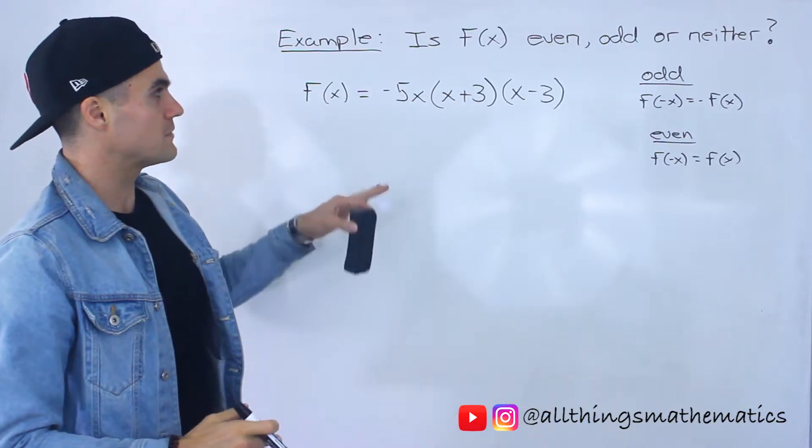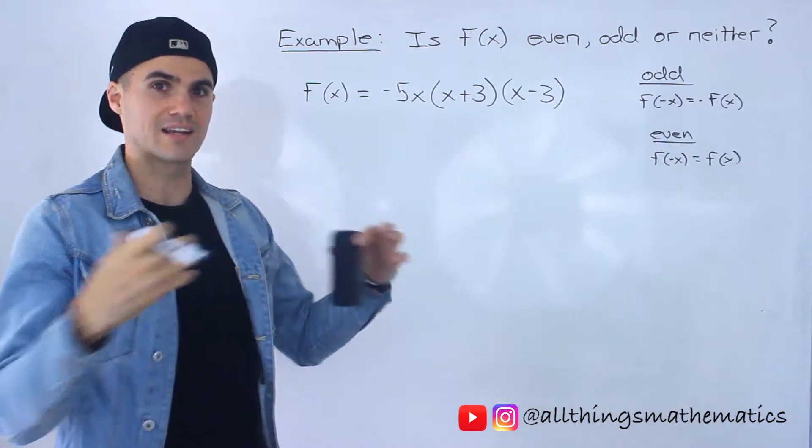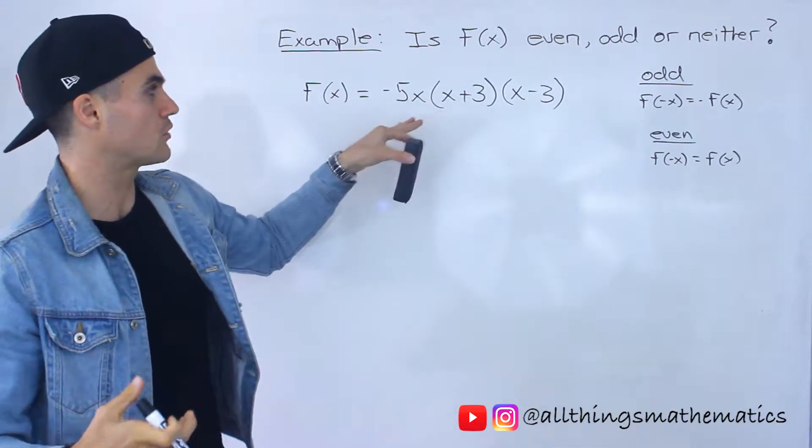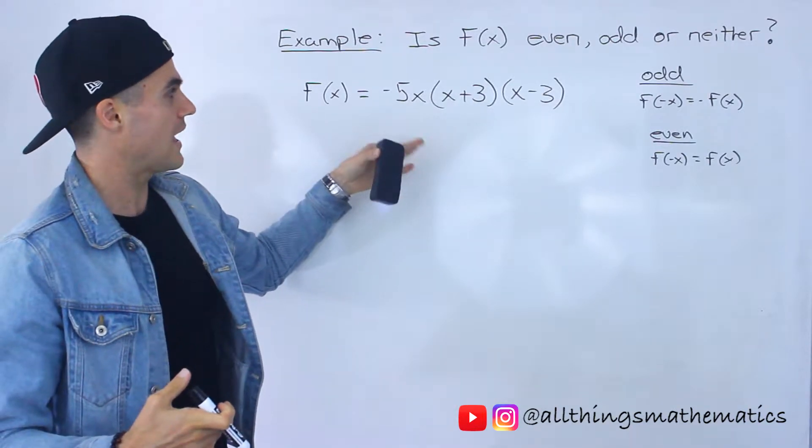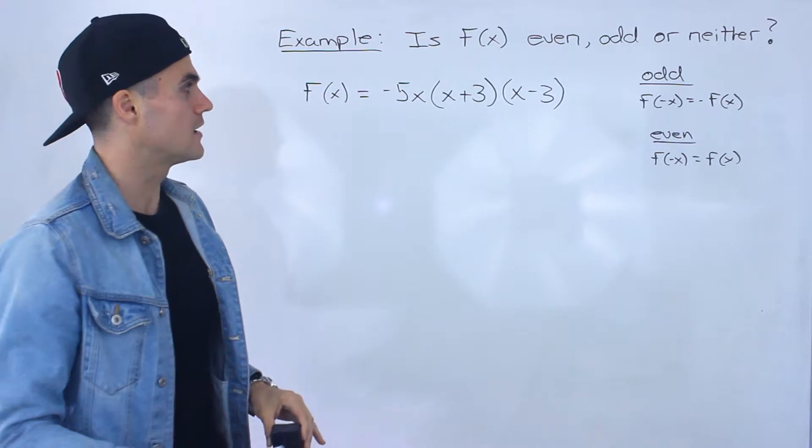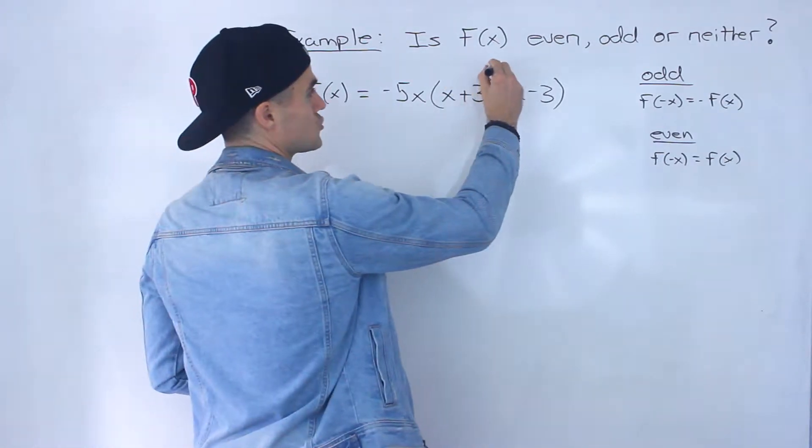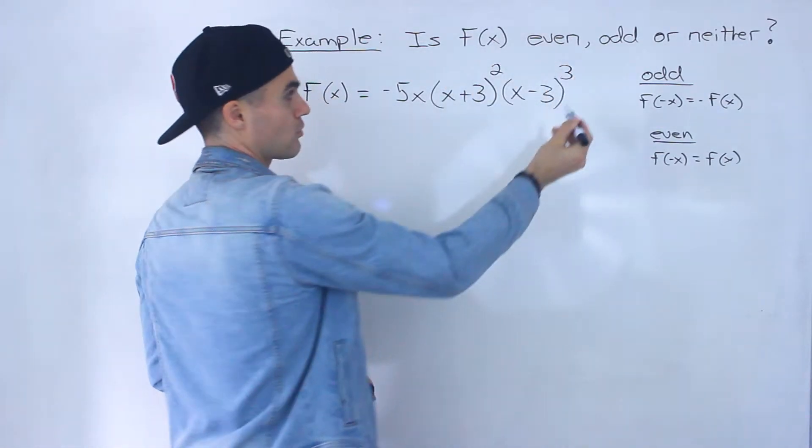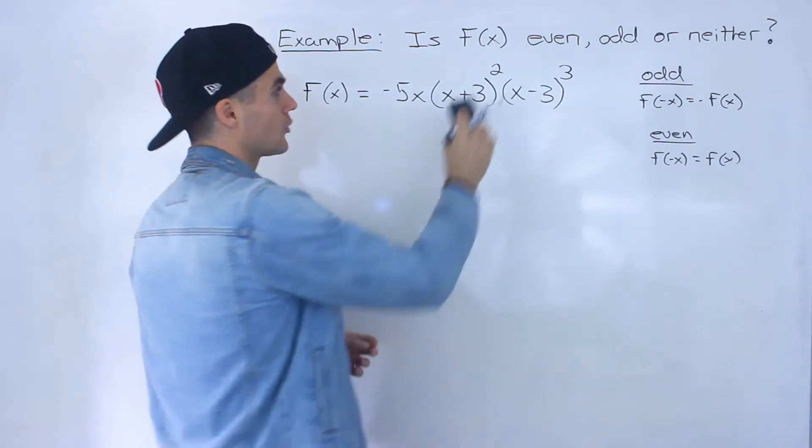So far we've been dealing with polynomial functions that have been expanded, but notice this is a polynomial function in factored form. We can expand this—the expansion wouldn't be too bad—but what if we had an exponent 2 here and an exponent 3? Then the expansion can get a little wild.